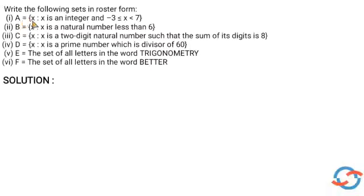First one: A is equal to the set of all x such that x is an integer and minus 3 less than or equal to x less than 7. So A contains integers from minus 3 up to but not including 7.